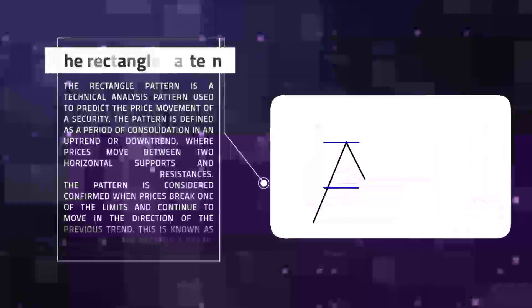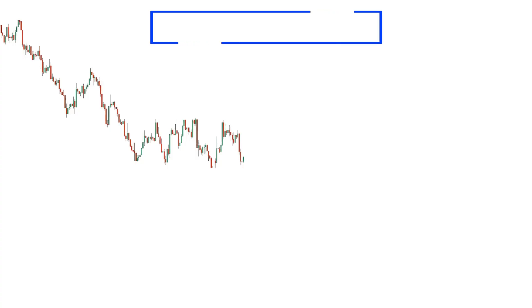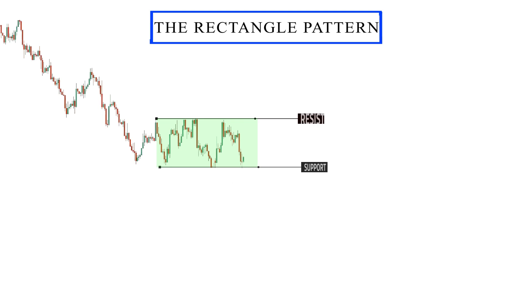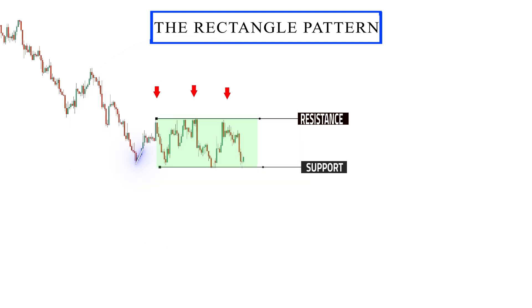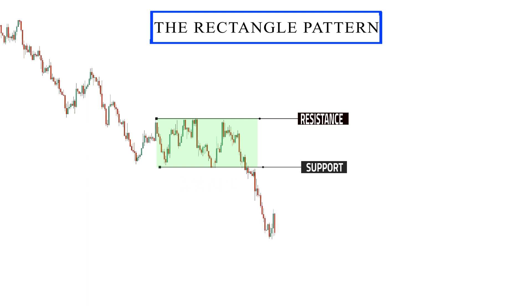The rectangle pattern is a technical analysis pattern used to predict the price movement of a security. The pattern is defined as a period of consolidation in an uptrend or downtrend, where prices move between two horizontal support and resistance levels. A rectangle is formed when prices maintain a relatively narrow price range for a period of time, while the highs and lows move towards the upper and lower limits respectively, creating a price range with horizontal support and resistance that looks like a rectangle. Once a rectangle has formed, investors wait for prices to break one of the limits and move in the direction of the previous trend. This breakout is known as the rectangle breakout.